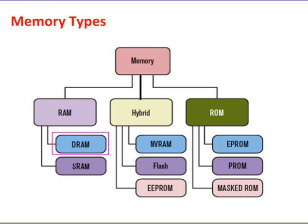When deciding which type of RAM to use, system designers must consider access time and cost. SRAM devices offer extremely fast access time — approximately four times faster than DRAM — but are much more expensive to produce. Generally, SRAM is used only where access speed is extremely important. A lower cost per byte makes DRAM attractive whenever large amounts of RAM are required. Many embedded systems include both types: a small block of SRAM (a few kilobytes) and a much larger block of DRAM for everything else.